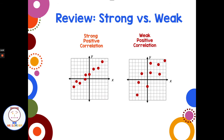With scatter plots we can have a strong correlation or a weak correlation. If the points are really close to a line, that shows a strong positive correlation. This other example also has a positive correlation but the points are much more spread out — it's still going up from left to right, but that's an example of a weak positive correlation. They're just more dispersed.